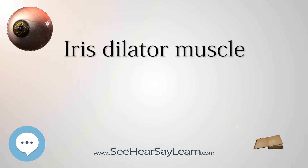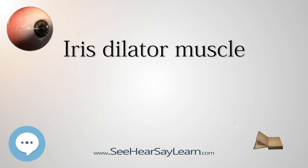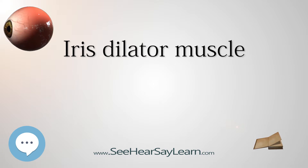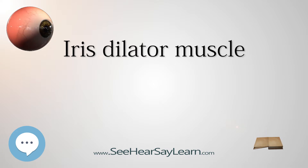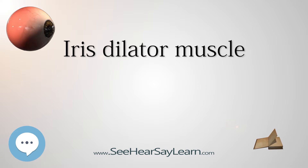The pupillary dilator acts to increase the size of the pupil to allow more light to enter the eye. It works in opposition to the pupillary constrictor. Pupil dilation occurs when there is insufficient light for the normal function of the eye and during heightened sympathetic activity, for example in the fight-or-flight reflex.